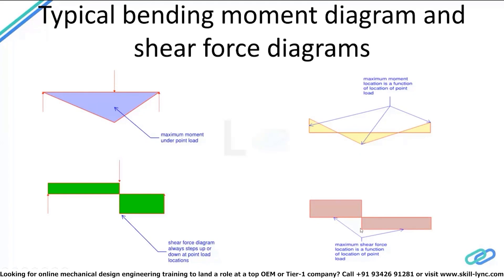If you look at the shear force diagram for the fixed-fixed beam, it is more or less similar in that you will have vertical reactions at each support, and then there'll be a sudden drop in the shear force due to the presence of a point load. Whenever we see a sudden drop in the shear force diagram, that indicates there is a concentrated load present at that location.